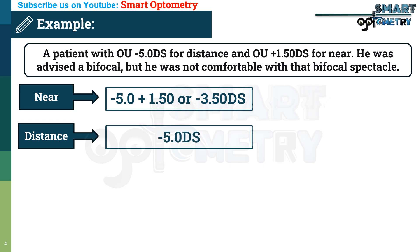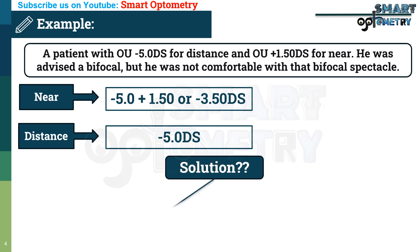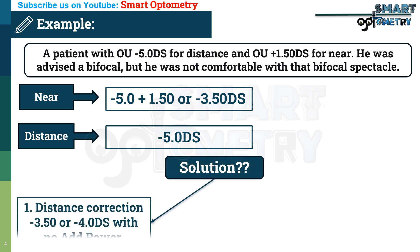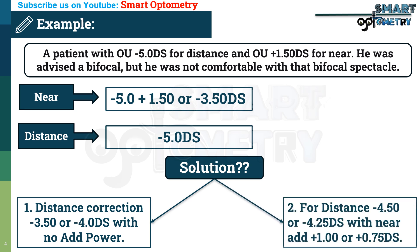This problem can be solved in two ways. First: distance correction of −3.50 diopters or −4.00 diopters with no add. Second: distance correction of −4.50 diopters or −4.25 diopters with a near add of +1.00 or +0.75 diopters.